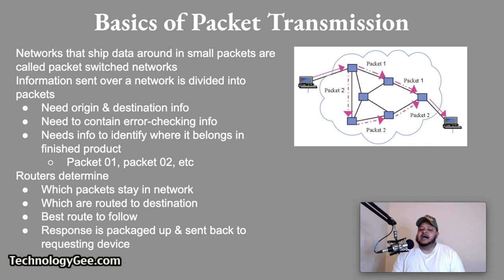Another way to visualize this is to think of yourself ordering a dining room table set off a website. You see an image of the complete dining room set — the tables and the chairs. When the vendor prepares to ship you the table, they break down the table and chairs and wrap them in their own boxes, along with a set of instructions on how to reassemble the unit. The vendor attaches a shipping label with your home address to each box or one label for the entire pallet to be delivered to your home.